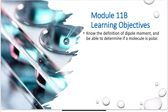We talked about polarity of bonds. If the electronegativity difference is big enough, you could have an ionic bond. If the electronegativity difference is a little smaller, we could have a polar covalent bond. If it's even smaller, we consider it non-polar covalent, or purely covalent. It's a range — a spectrum of bonding.